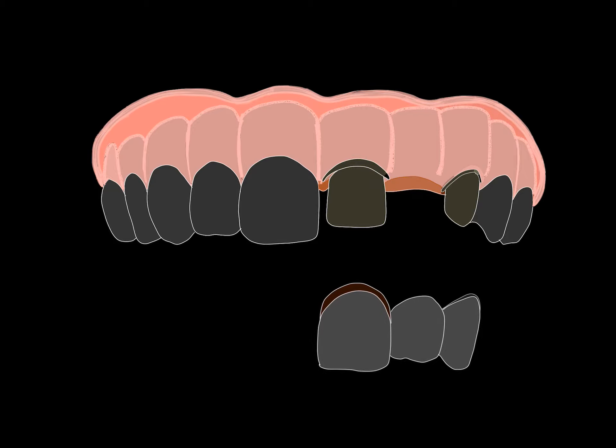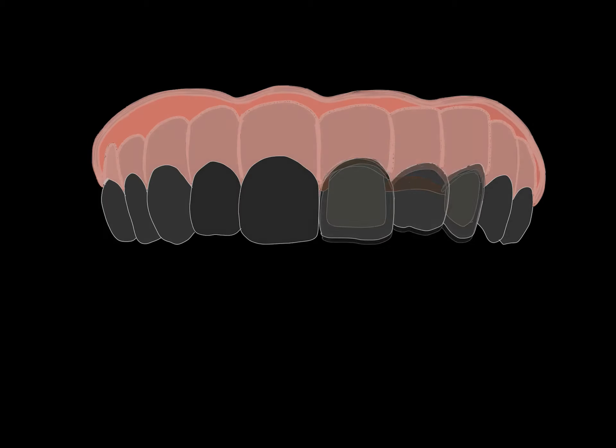A fixed prosthesis is a restoration or replacement which is attached to natural teeth, roots, or implants by a cementing medium.